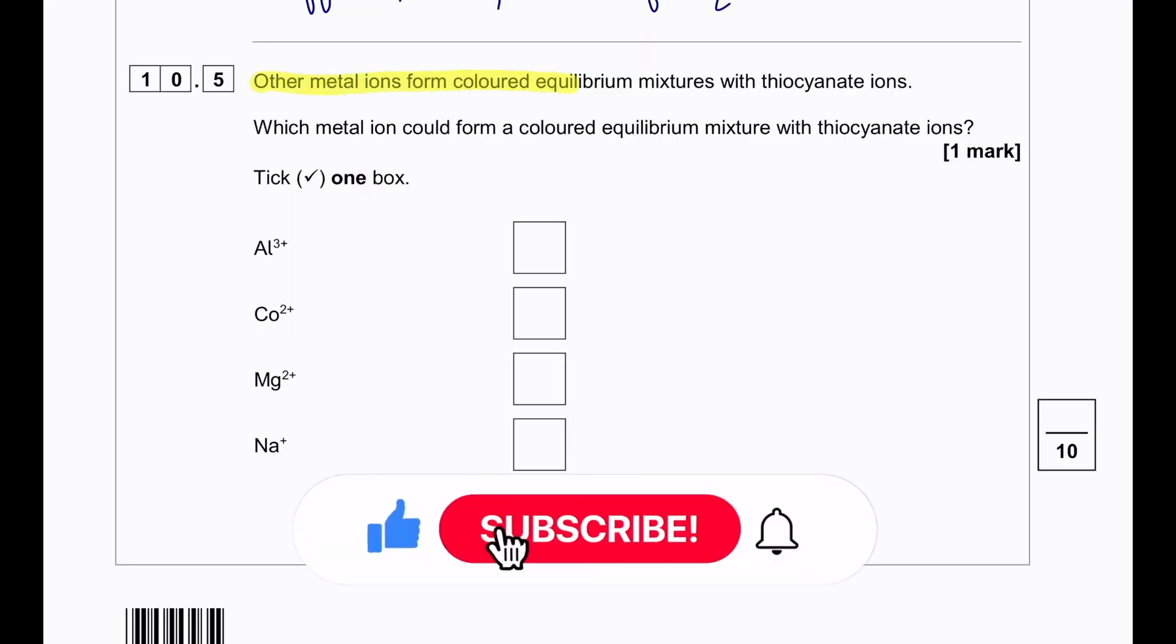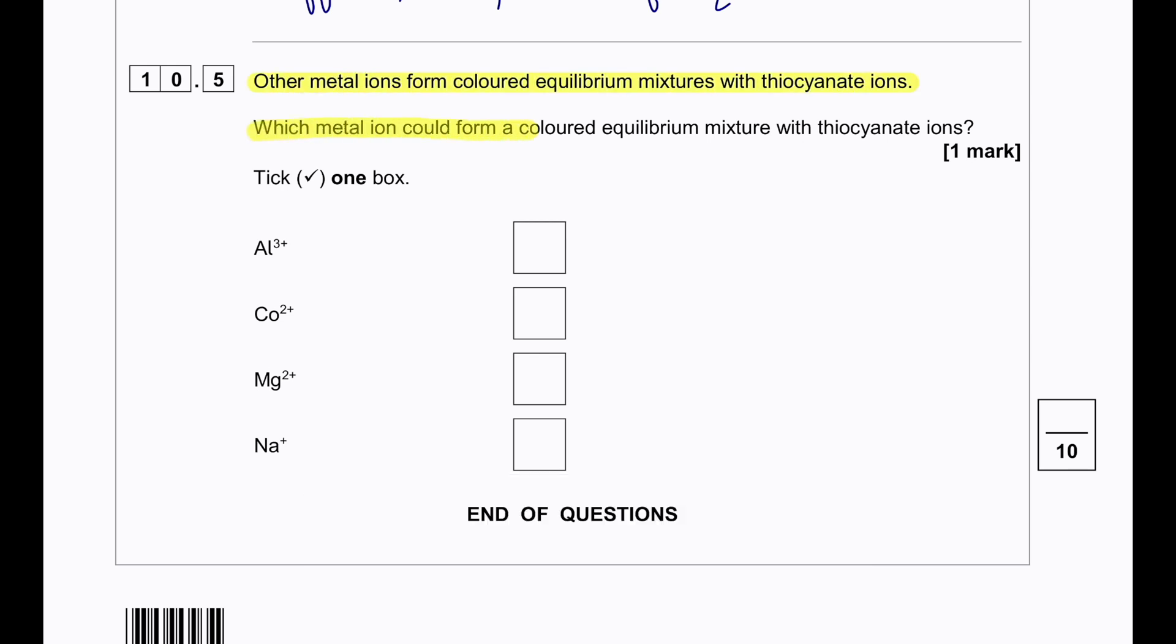Other metal ions form colored equilibrium mixtures with thiocyanate ions. Which metal ion could form a colored equilibrium mixture with thiocyanate ions? Whenever a question like this is asked, always remember about transition metals. So aluminium, magnesium and sodium, they are not transition metals. Cobalt will be the answer.